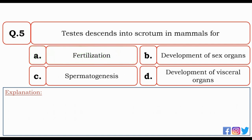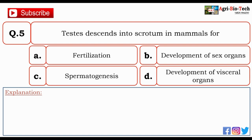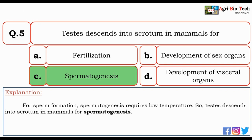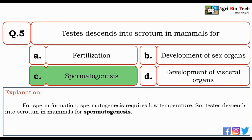Next question: testes descend into the scrotum in mammals for — fertilization, development of sex organs, spermatogenesis, or development of visceral organs? The correct answer is C — spermatogenesis. For sperm formation, spermatogenesis requires a low temperature. So testes descend into the scrotum in mammals for spermatogenesis.